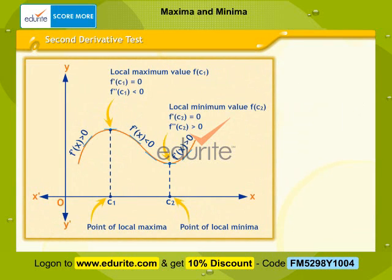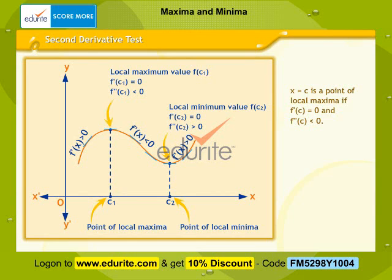Let f be a function defined on an open interval I, with c belonging to I, and let f be twice differentiable at c. x equals c is a point of local maxima if f'(c) equals 0 and f''(c) is less than 0; the value f(c) is the local maximum value of f. x equals c is a point of local minima if f'(c) equals 0 and f''(c) is greater than 0; the value f(c) is the local minimum value of f.